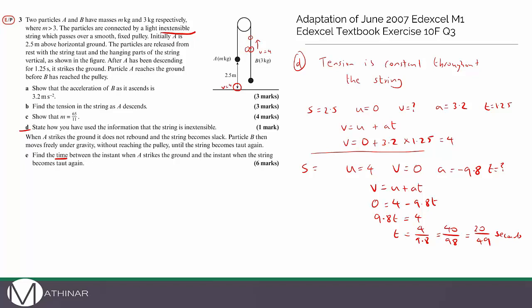Then B falls back down: U = 0, A = 9.8 m/s², and by symmetry the time to fall back down equals the time to rise, which is also 20/49 seconds. The total time for B to go up and come back down — making the string taut again — is 2t = 40/49 seconds. So after A hits the ground, it takes 40/49 seconds for the string to become taut again.